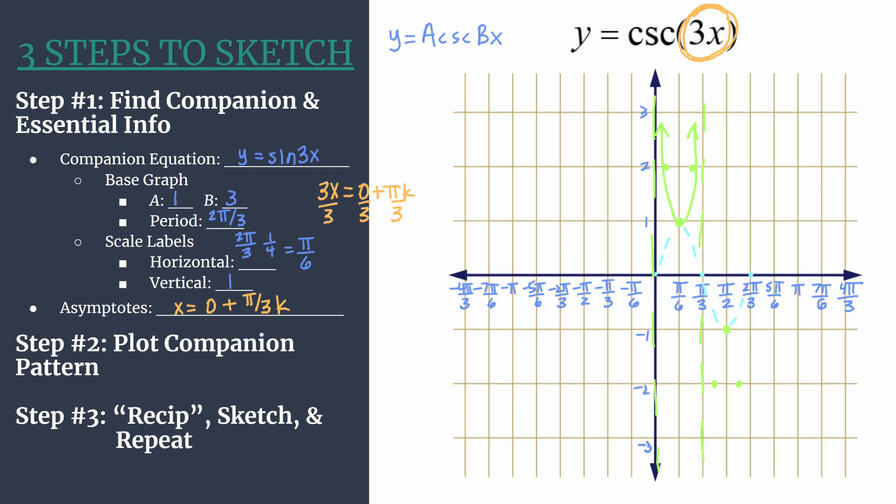Notice that this point here at pi over six, one is what we call a local or relative minimum. That just means within the area that it's in, it's the lowest y value, not the absolute but relatively.